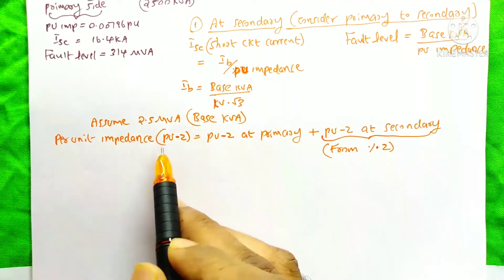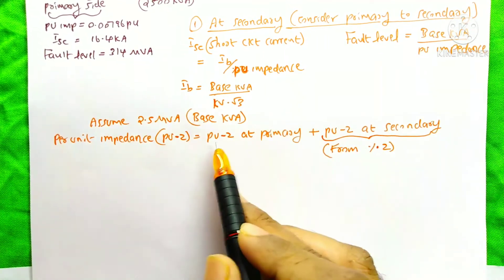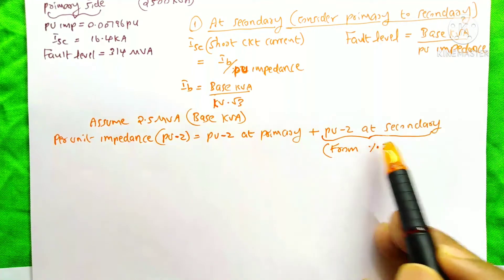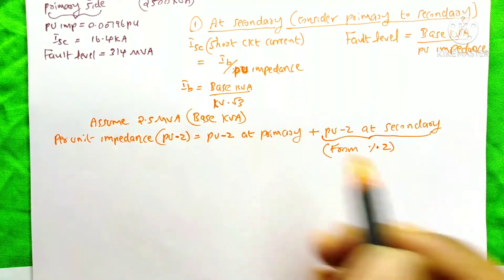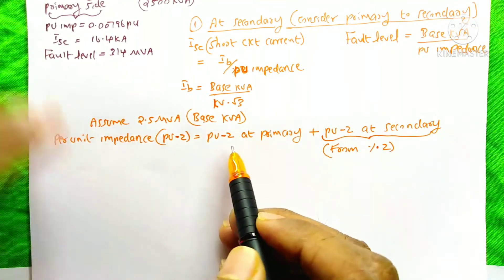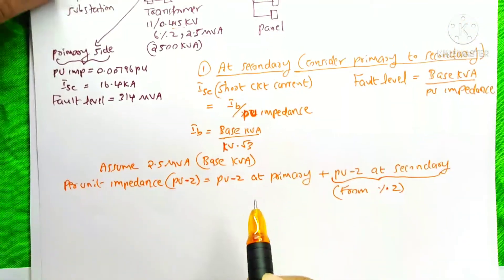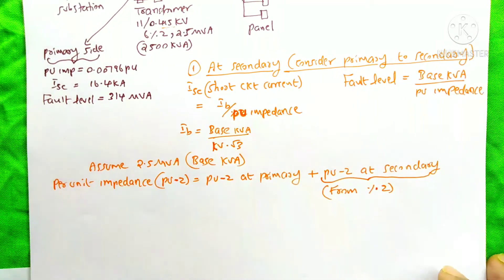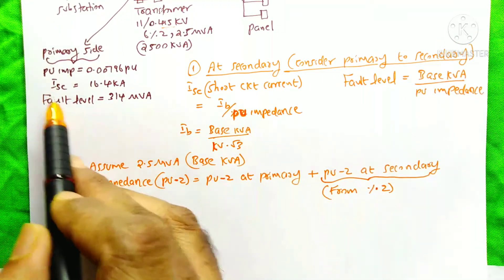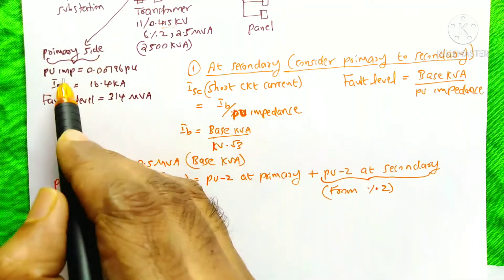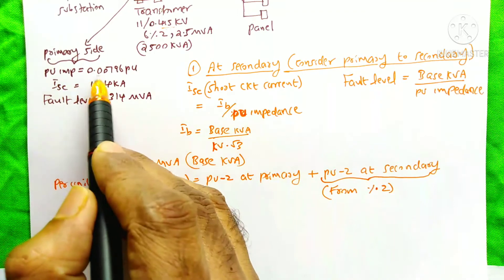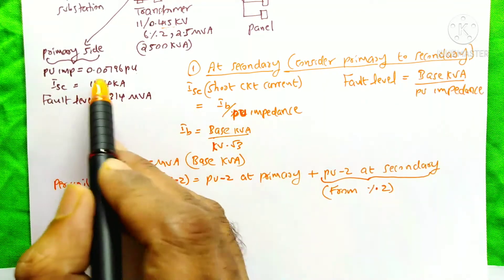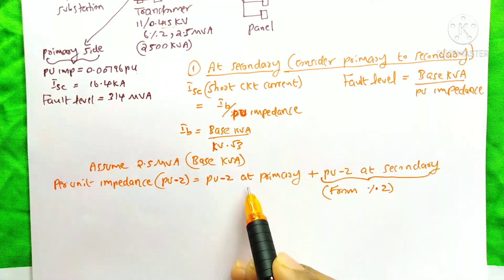The per unit impedance equation is per unit impedance at primary plus per unit impedance at secondary. In the previous video, we already calculated the per unit impedance at primary as 0.0076 per unit. So we need to just put that value here. We already have this data, so we directly use that value.